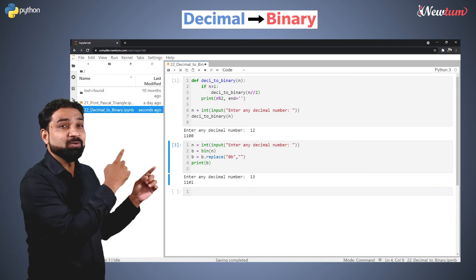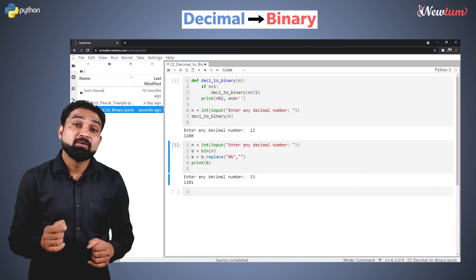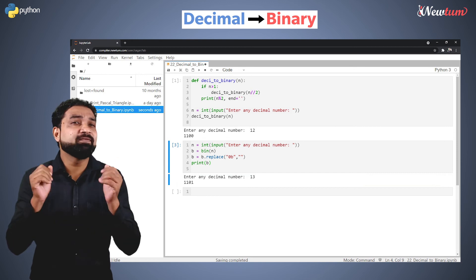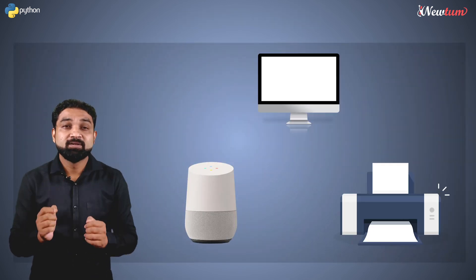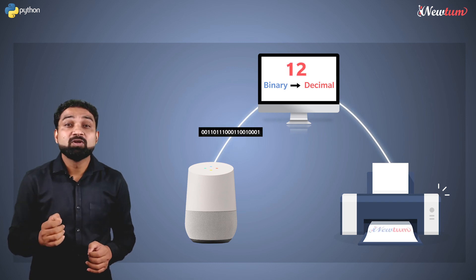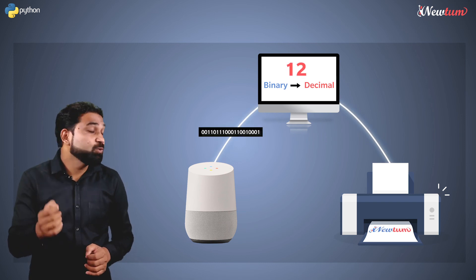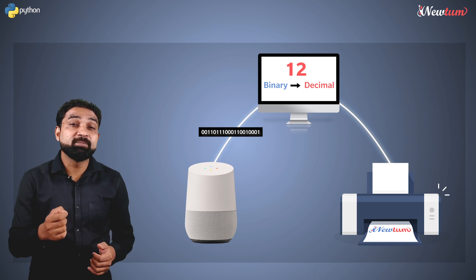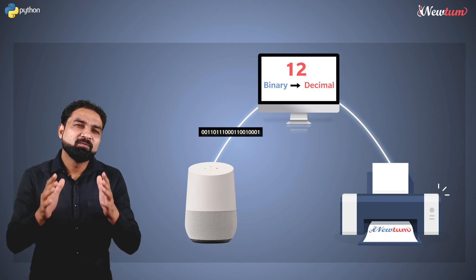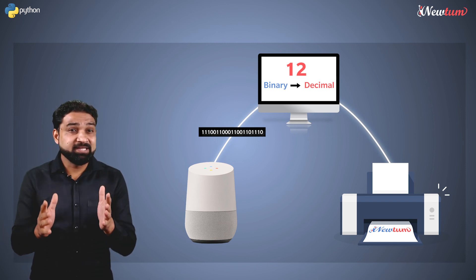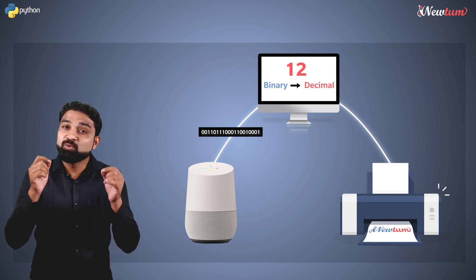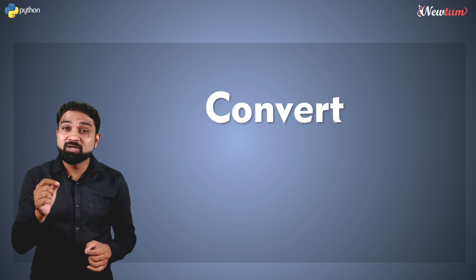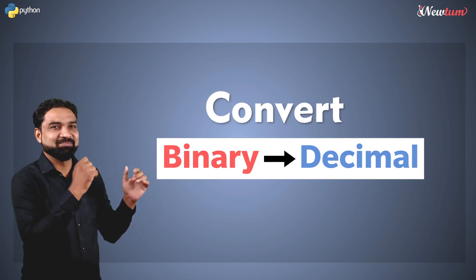In the last session, we studied how to convert decimal to binary. But when we have to read data from small devices like smart home devices or small printers, we get data in binary form. So to understand and use this data, we need to convert them into decimal. There are many practical use cases to convert binary into decimal, and today we will study how to convert binary to decimal.